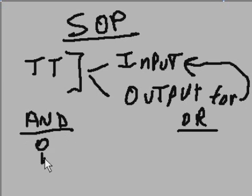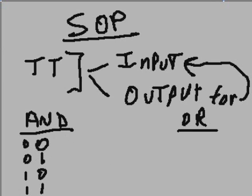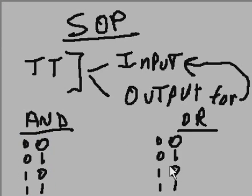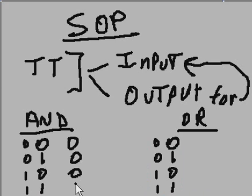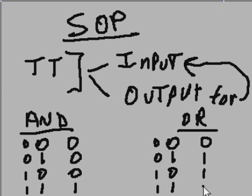So you'd have inputs: 0, 1, 0, 1 for A and 0, 0, 1, 1 for B — same for both tables. For the AND gate: 0 and 0 gives 0; 0 and 1 gives 0; 1 and 0 gives 0; 1 and 1 gives 1. For the OR gate: 0 or 0 gives 0; 0 or 1 gives 1; 1 or 0 gives 1; 1 or 1 gives 1.